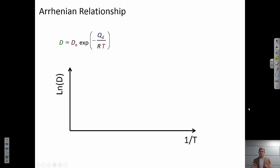So when we're looking at activated processes, if we want to measure some data and determine these variables, for example, what is the activation energy for a system, we are going to do that by plotting log of d on the y-axis and 1 over T on the x-axis.